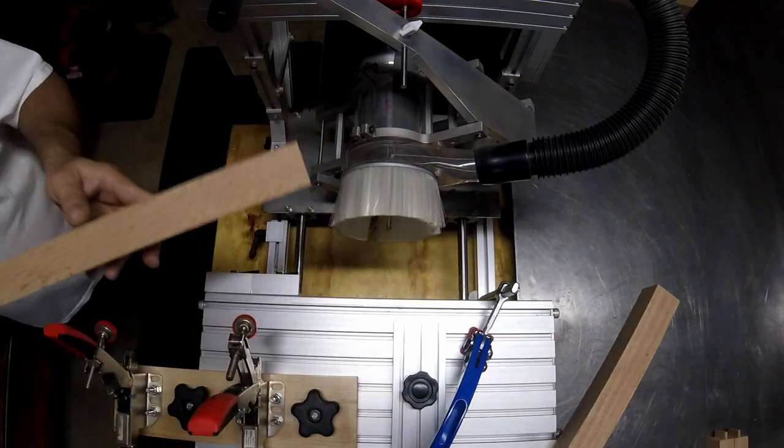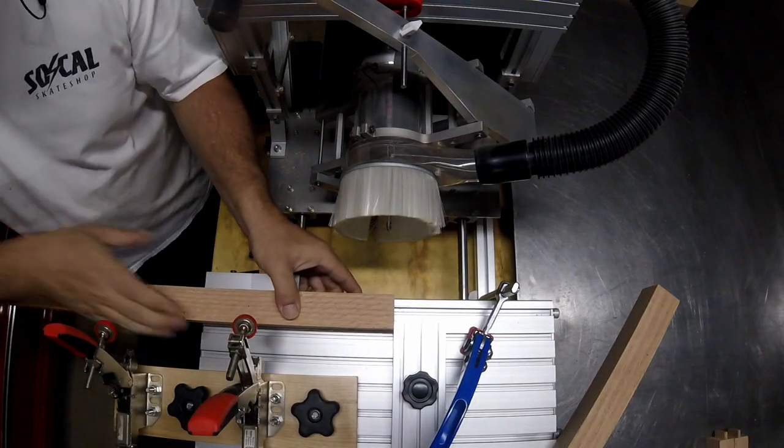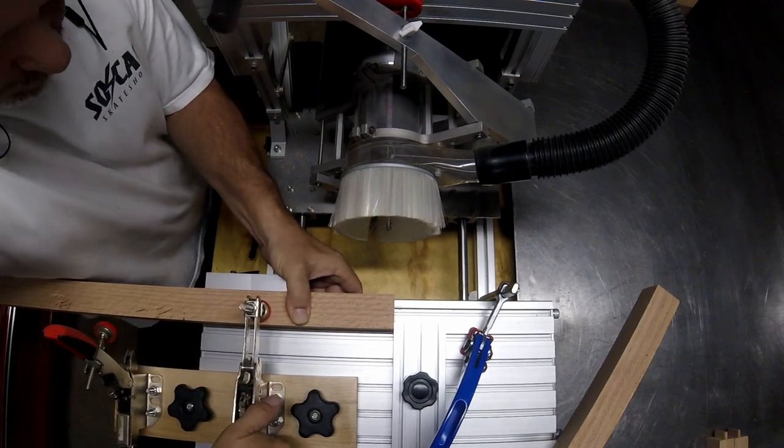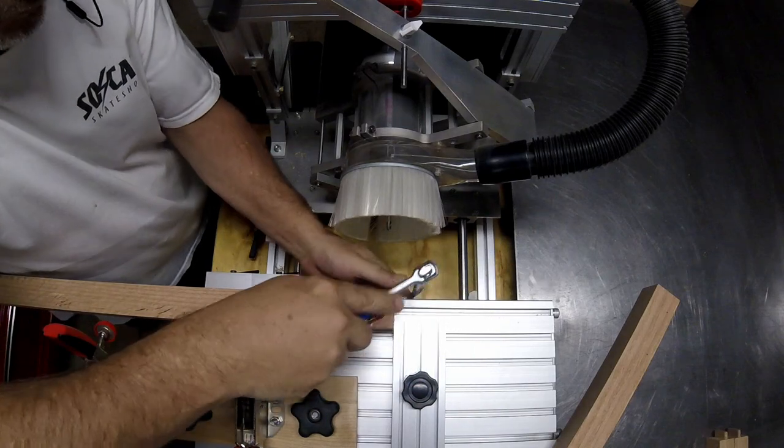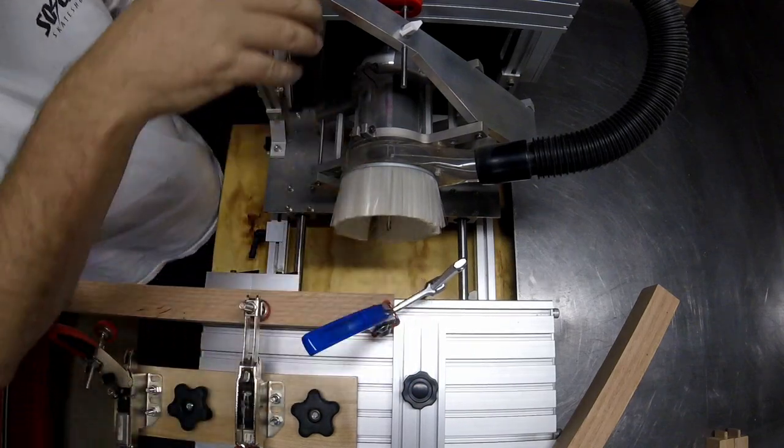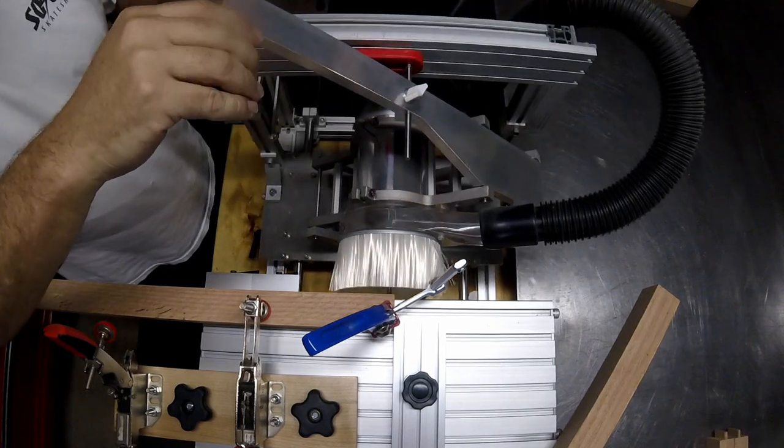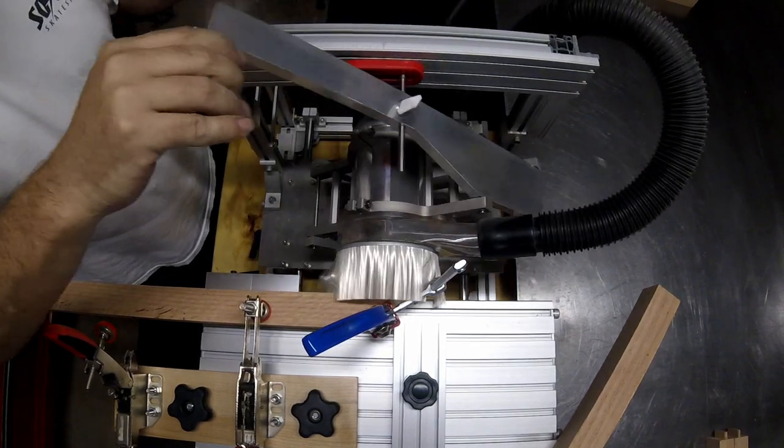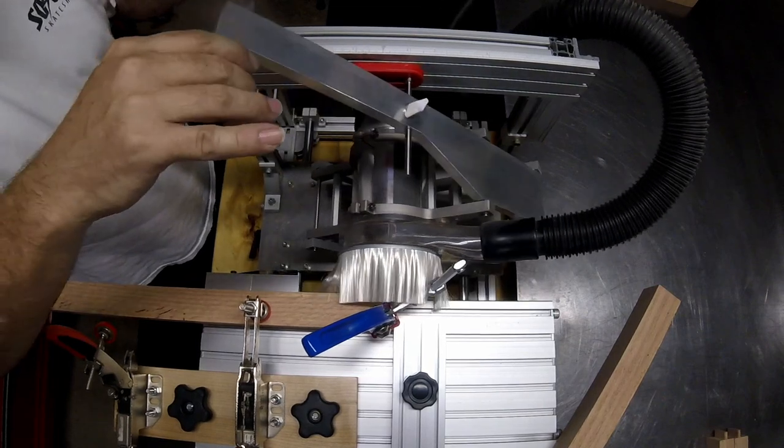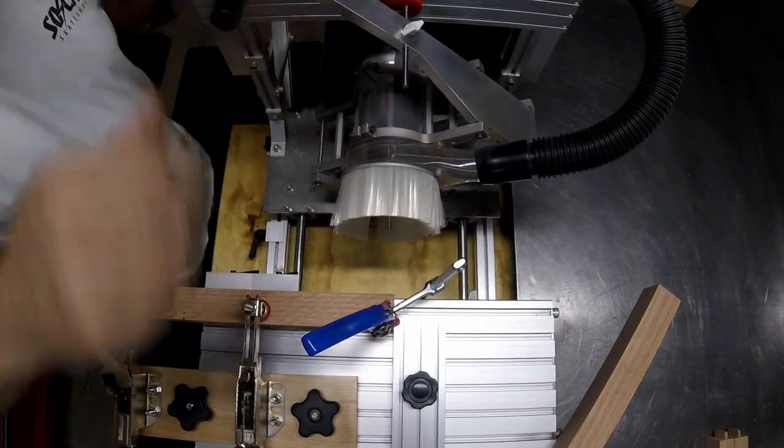Mortises go really fast so you can see here I don't have to worry about the depth stop or anything. I just set it one time and I'm good to go and I'm using the fence in the same location as it was previously for the tenons and there's a fence stop on the front of the table to reference off of for square.